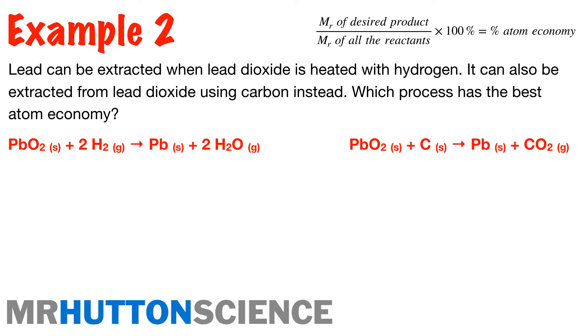Okay, so we've got two equations here, two processes that both produce lead, two ways of extracting the lead, and we want to find out which one has the best atom economy. So if we focus on process one on the left there, so our MR of desired product, which is lead, over the MR of all the reactants, which is our lead oxide and our hydrogen, notice how in this one, our molar ratio is really important.